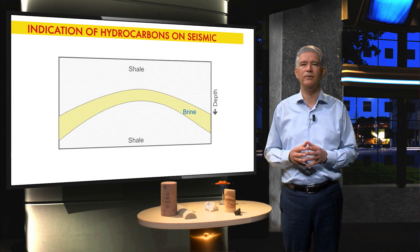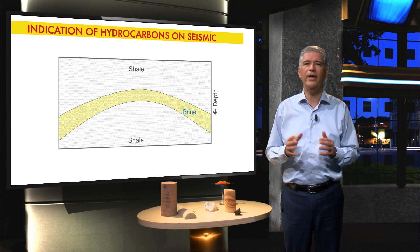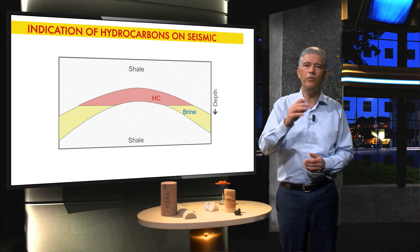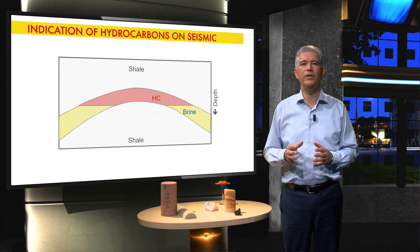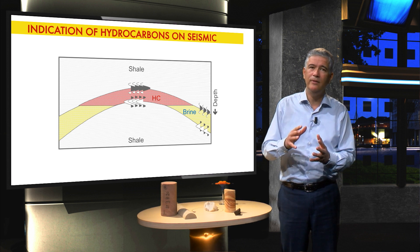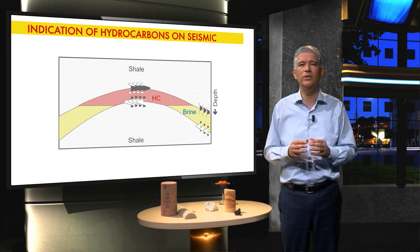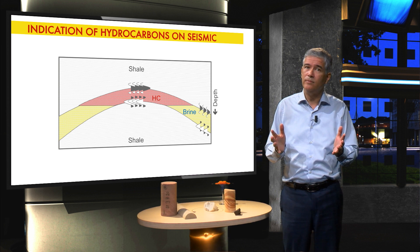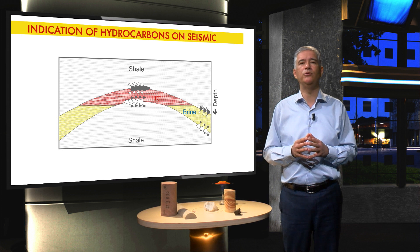Can we see hydrocarbons on seismic? The answer is yes, given the right circumstances. Assume you have a water-bearing sand layer, indicated in yellow, enclosed in shale. The top of this structure is filled with hydrocarbons, indicated in red. At the interface of water-bearing sand and shale we get a certain seismic response. At the boundary between shale and the oil layer, the reflection will be stronger because the density difference between shale and oil-bearing rock is larger than at the boundary between shale and water-bearing reservoir. Oil is less dense than water, so going from water-bearing to oil-bearing reservoir we would see an increase of amplitudes.